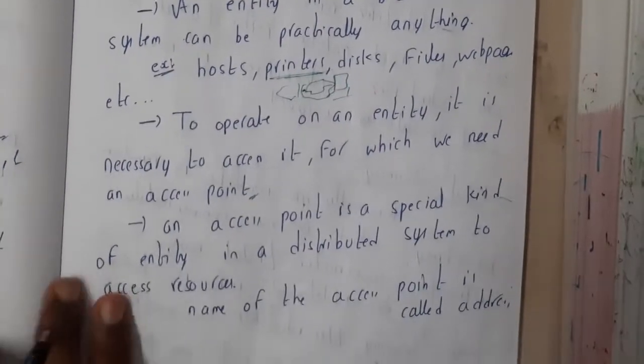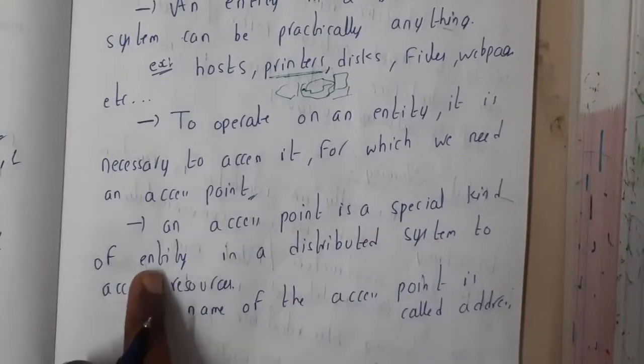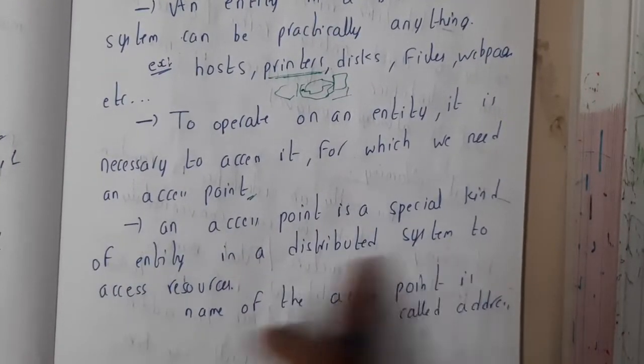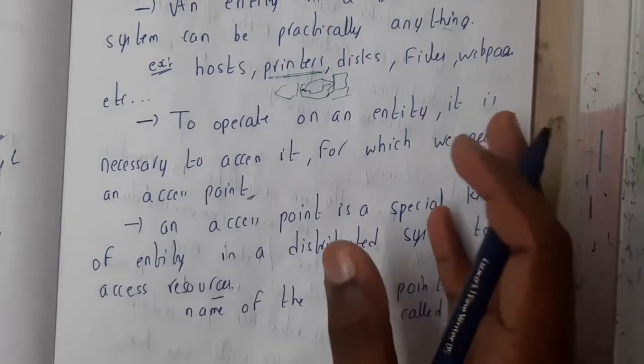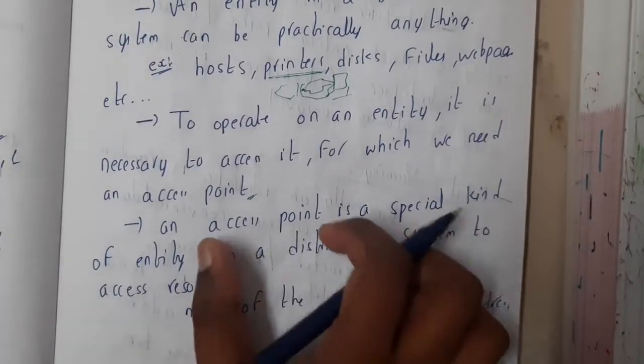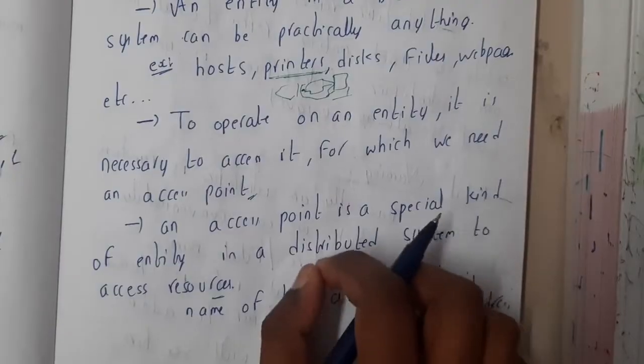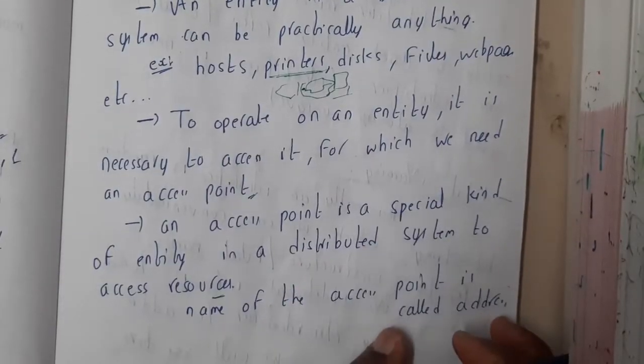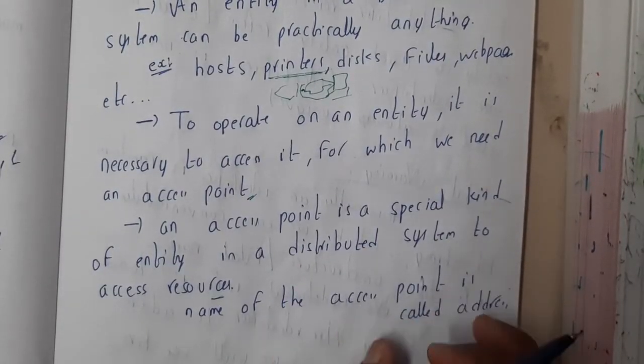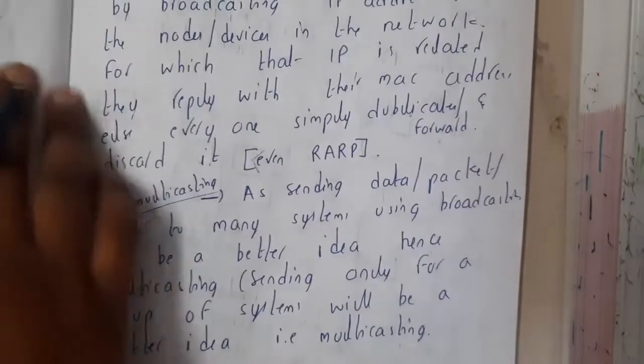Okay. So an access point is a special kind of entity in a distributed system. To access a resource, you will be using this access point, and this access point will have a particular address. So that is called an address. So the name of the access point is nothing but the address.